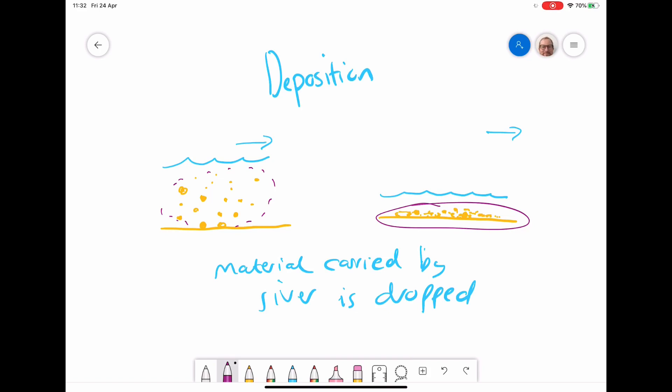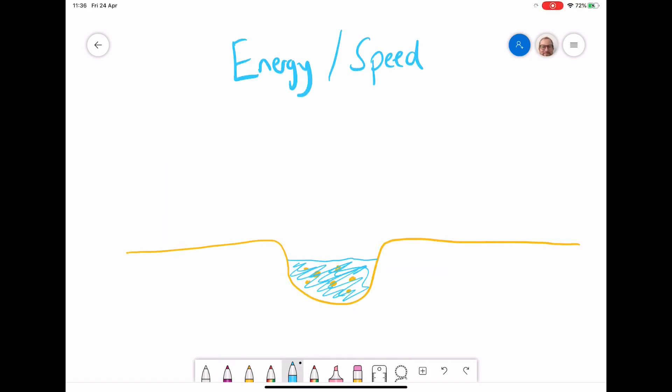I'm going to look at the factors that cause deposition to occur. One factor why deposition can occur is a decrease in the energy or speed of a river. So here is an example of a cross-section of a river which has got suspended material in it. I'm going to imagine that this river has flooded because of an increase in rainfall. So what's happened here is once the river has flooded outside the river channel, the amount of water is actually shallower, much shallower than in the main stream.